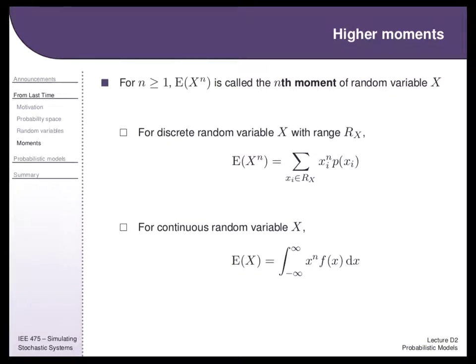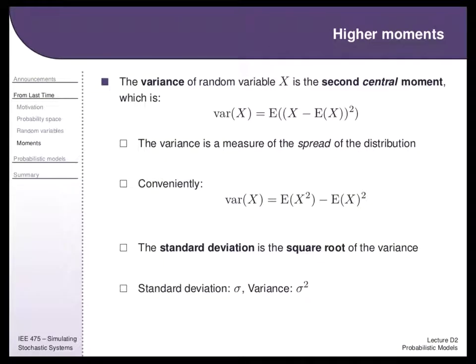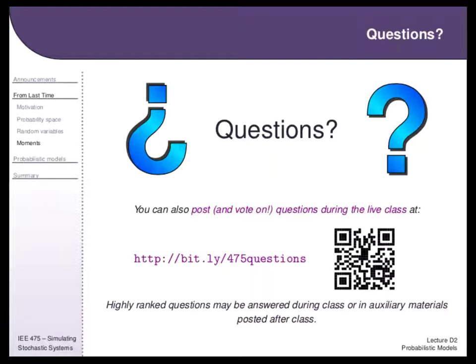We can generalize to higher-order moments using the same formulas raised to the nth power. The most important higher-order moment is the variance, which is the second central moment — equal to the second moment minus the square of the first moment. We often give distributions in terms of their moments, and we'll use sigma and sigma-squared to represent standard deviation and variance.